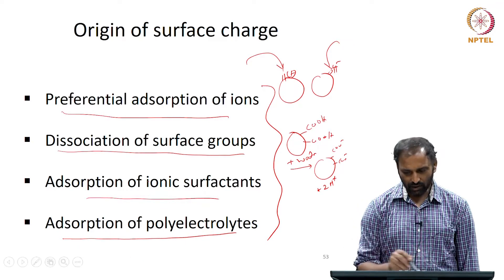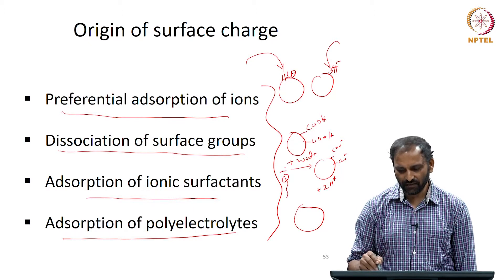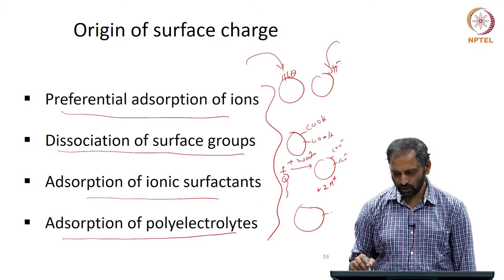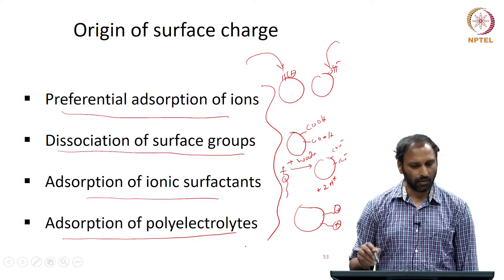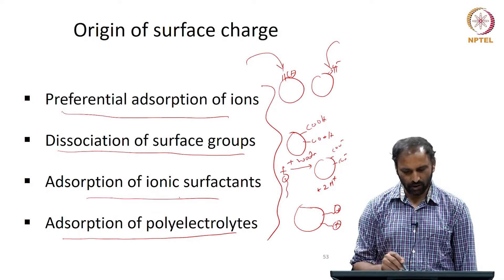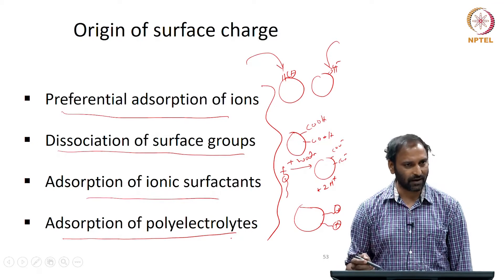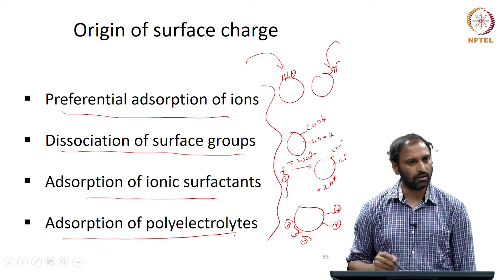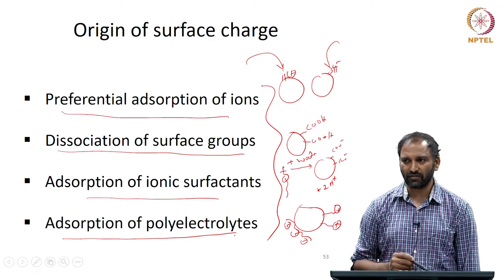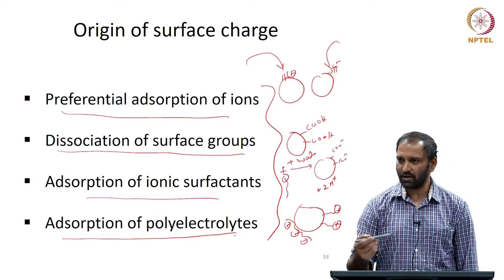Similarly, if I have a particle and add a charged surfactant, it could sit on the particle surface, and I could acquire either a positive or negative charge depending on whether I am working with a cationic or anionic surfactant. Similarly, charged polymers can also adsorb onto the particle surface and make the surface either positively or negatively charged. We have discussed this already earlier.